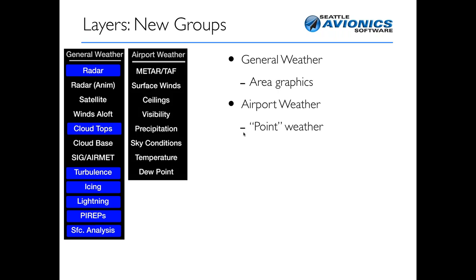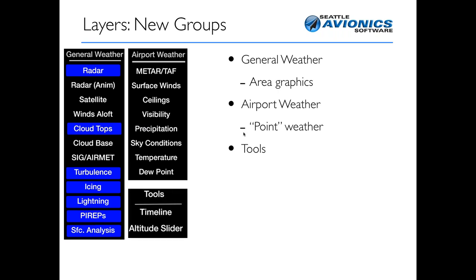The other type is airport-specific weather, which really means point weather. Radar is a blob covering the entire country, but a METAR or TAF is specific to a given airport. Similarly, surface winds, ceilings, visibility, precipitation, and sky conditions are all specific to one point. If you have five airports in view, you have five points. We call that airport weather — the second type. This lets you quickly distinguish: do you want the grand-scale general weather, or very fine data for a small area?